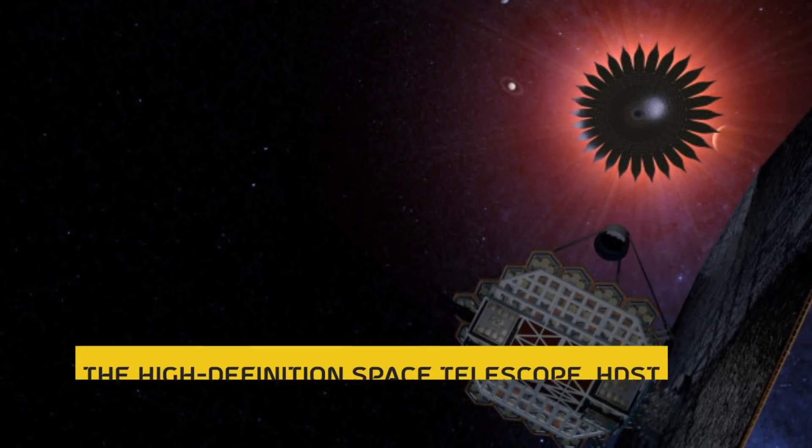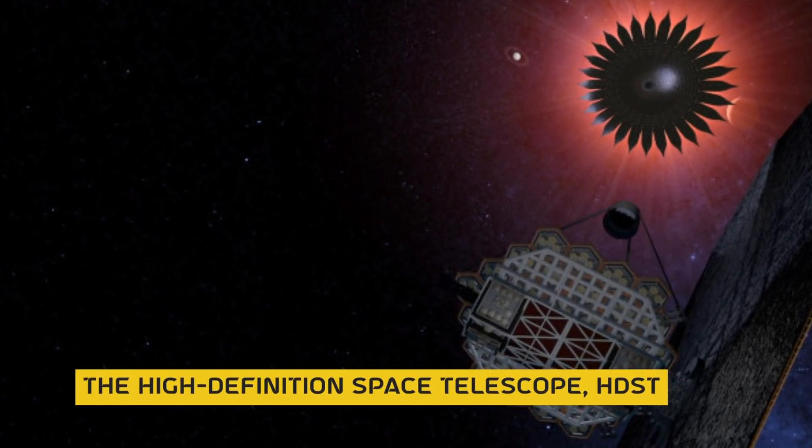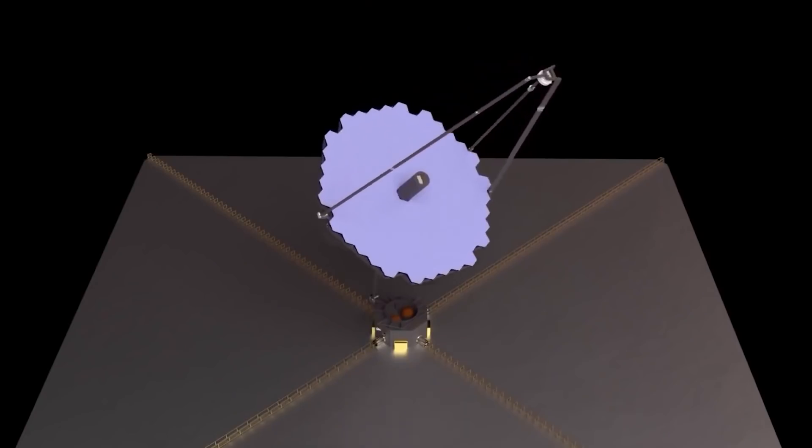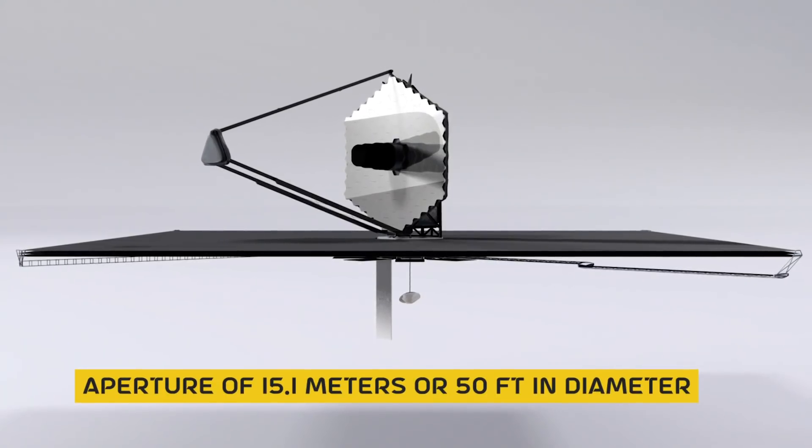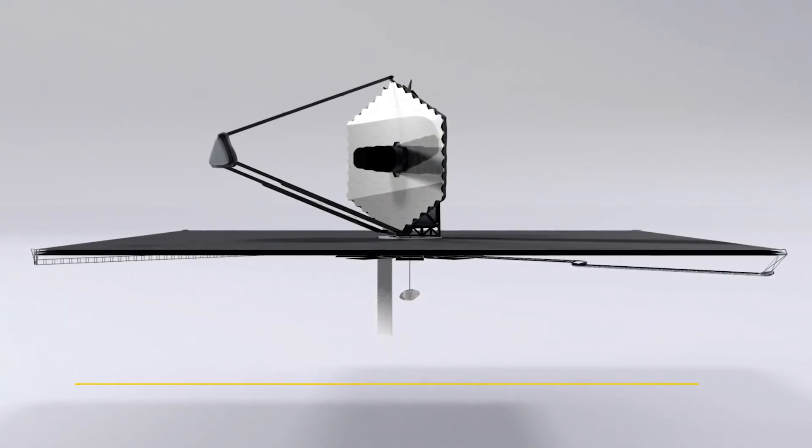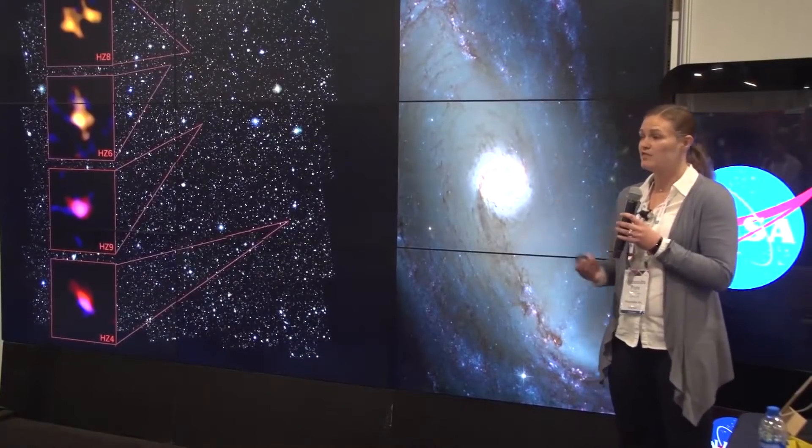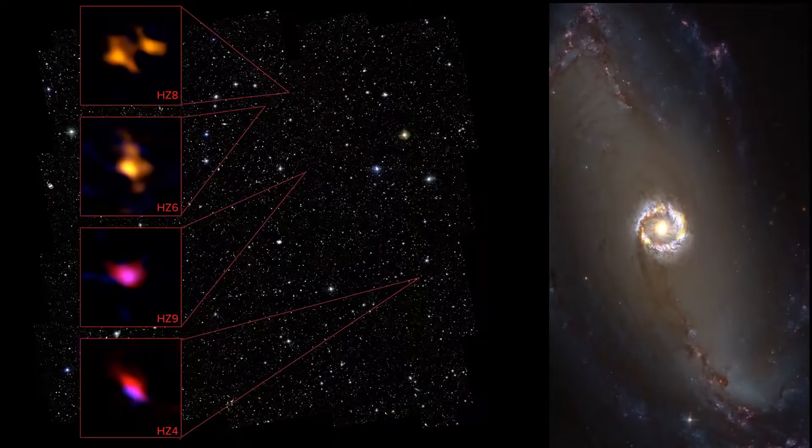LUVOIR-A, previously known as the High Definition Space Telescope, HDST, would be composed of 36 mirror segments with an aperture of 15.1 meters or 50 feet in diameter, offering images up to 25 times sharper than the Hubble Space Telescope.